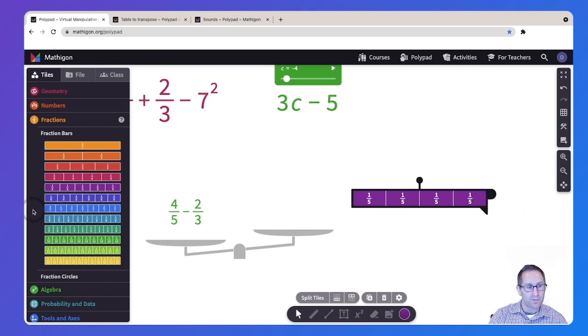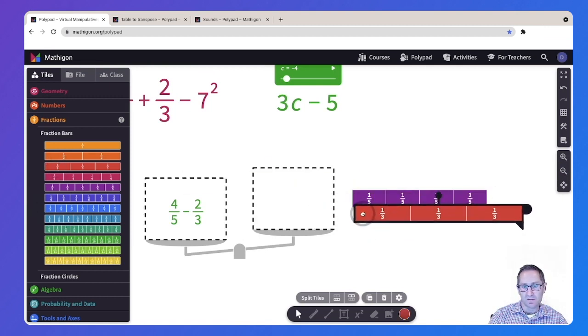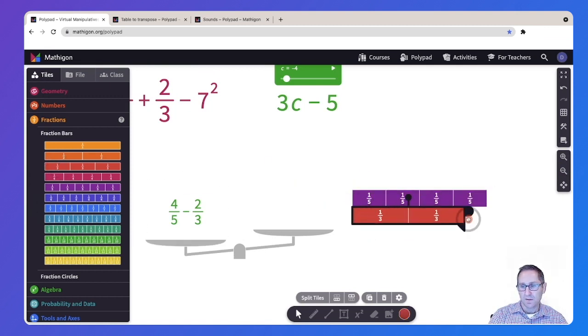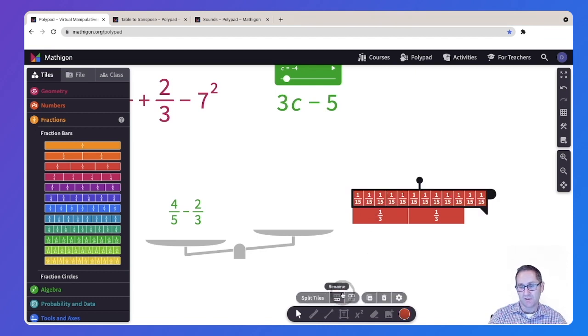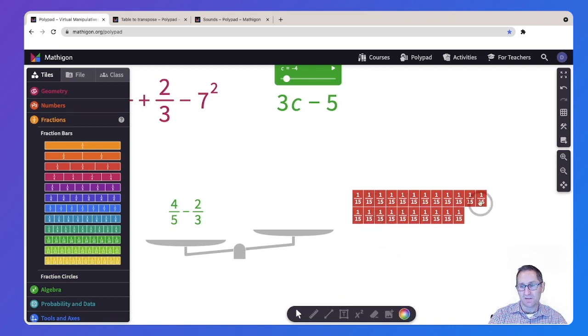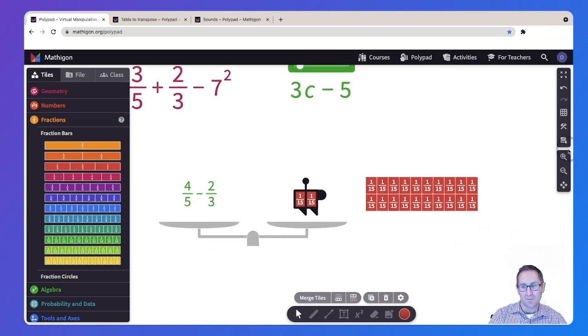I can find a common denominator with the rename option, make them both into fifteenths, and there I can see that four-fifths minus two-thirds is two-fifteenths. I'll split these tiles and I can take these two-fifteenths and just put them on that side of the canvas and it balances.